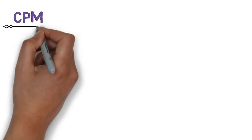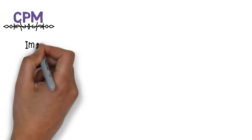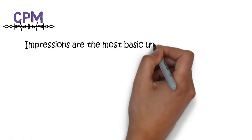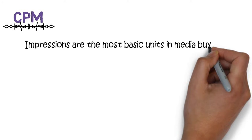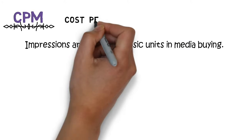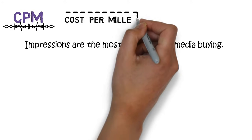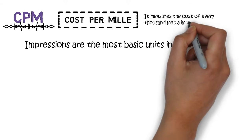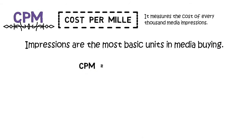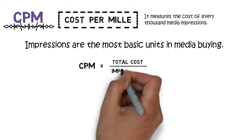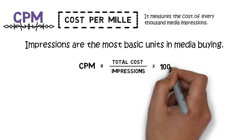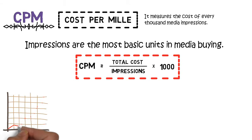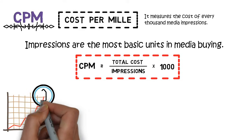First, let's take a look at CPM. If you have been watching my videos, you should know by now that impressions are the most basic units in media buying. CPM stands for cost per mil. It measures the cost of every thousand media impressions. It's calculated as cost divided by impressions, then times a thousand. The higher the CPM, the more expensive your media is, and vice versa.